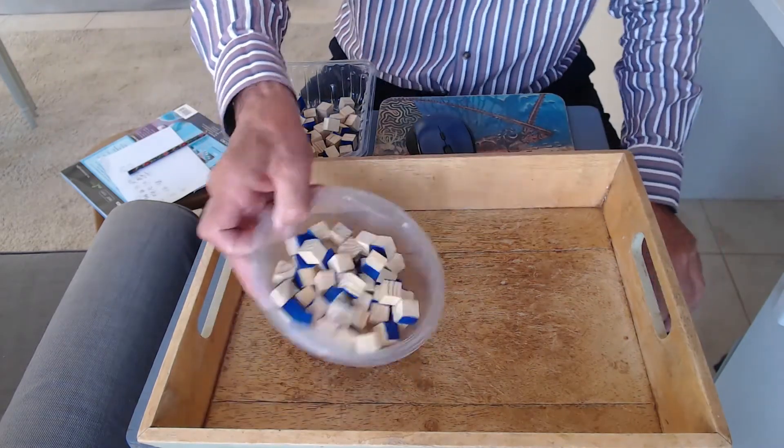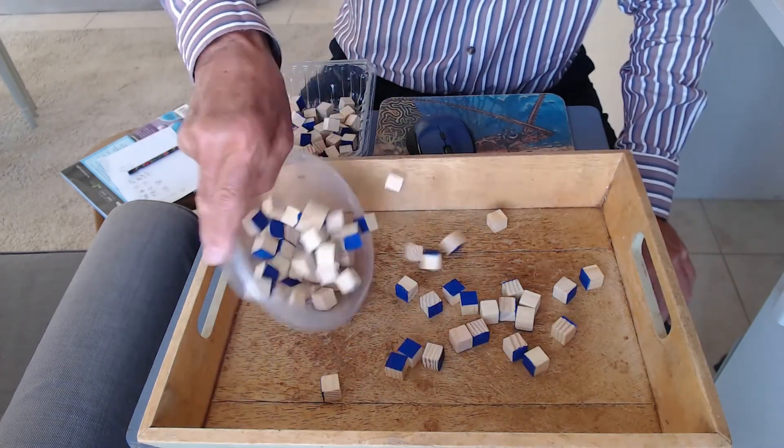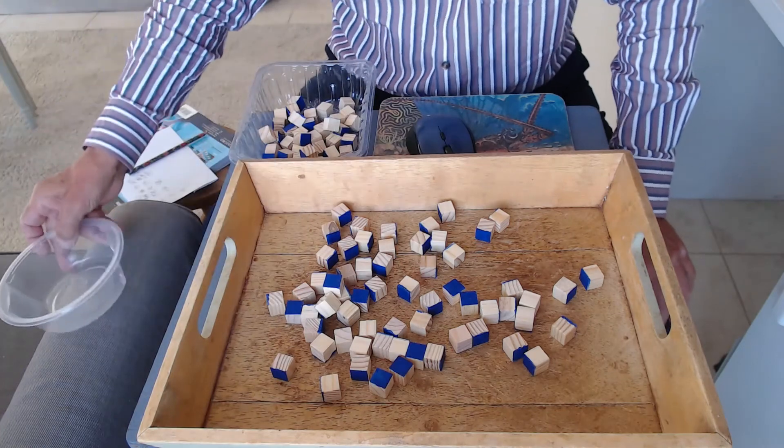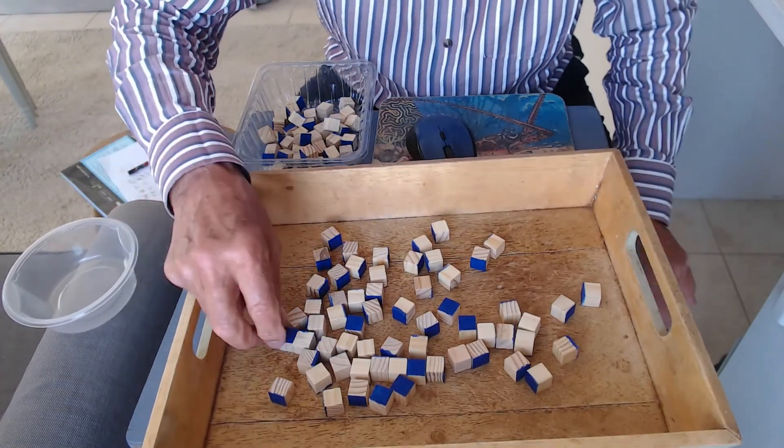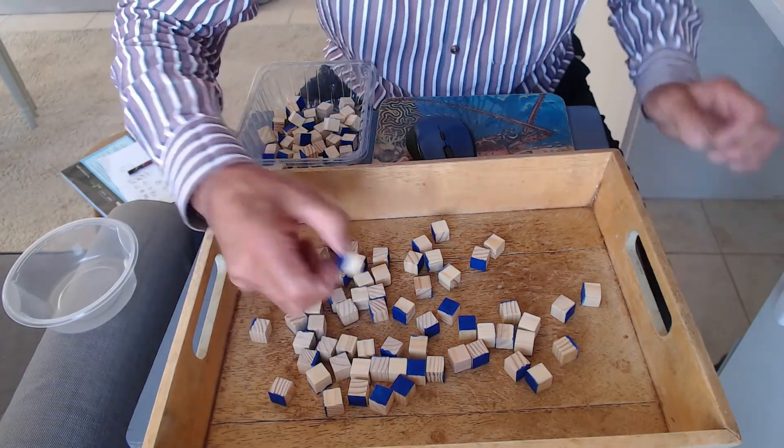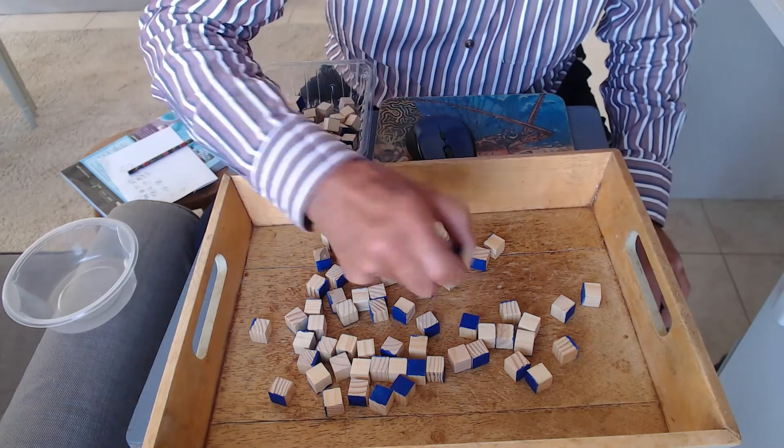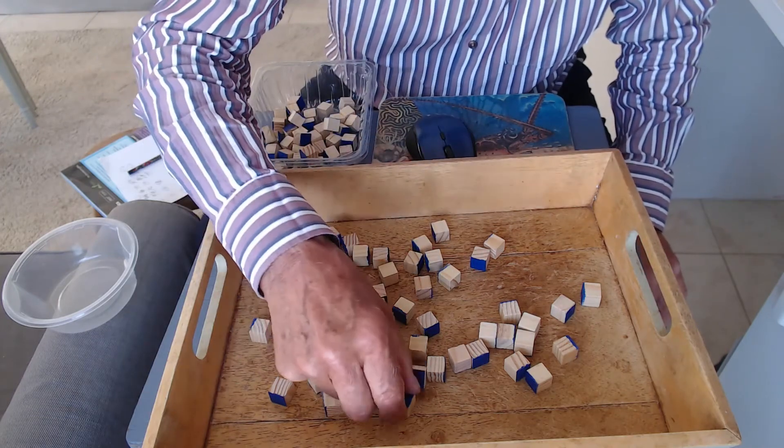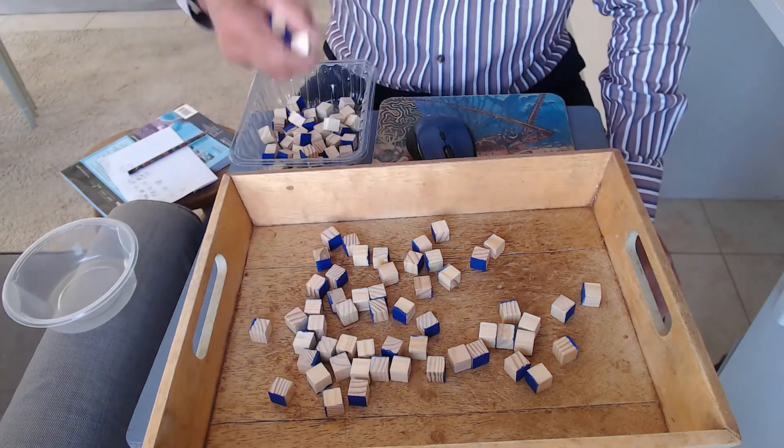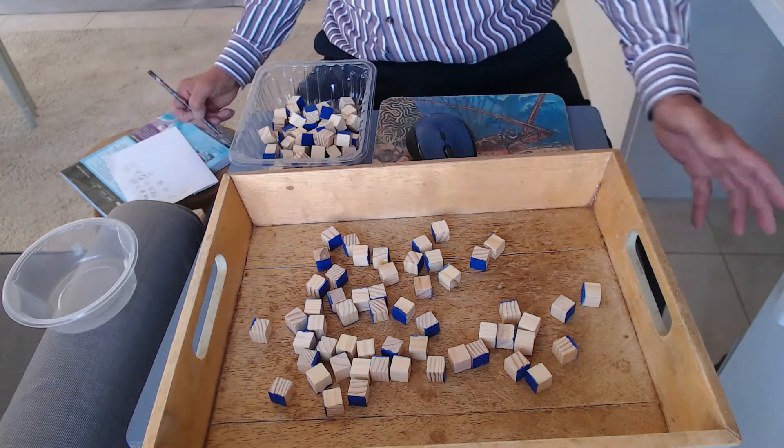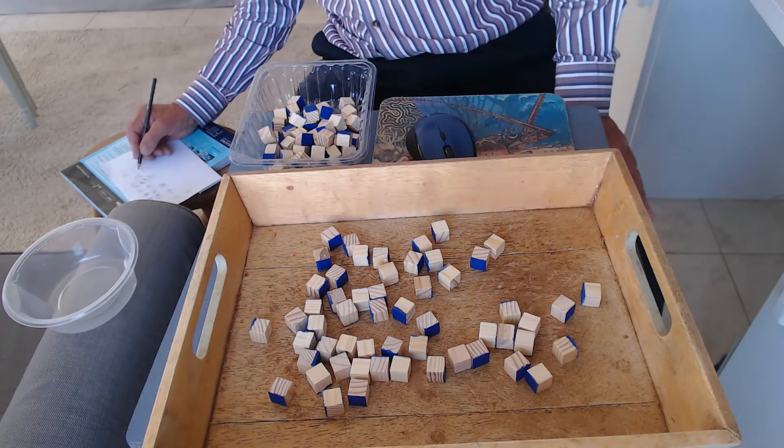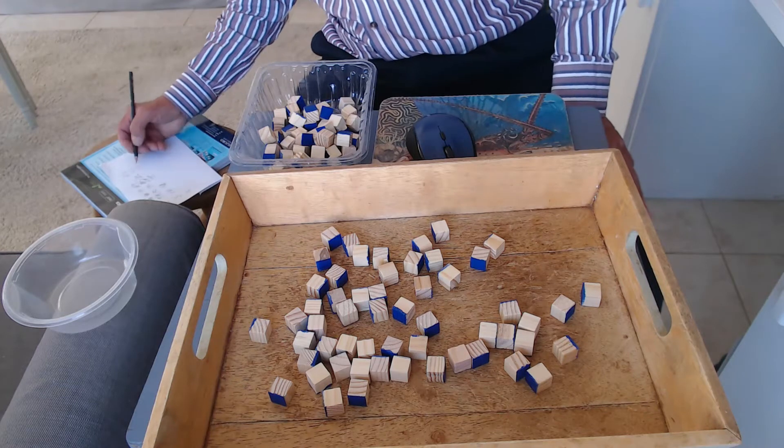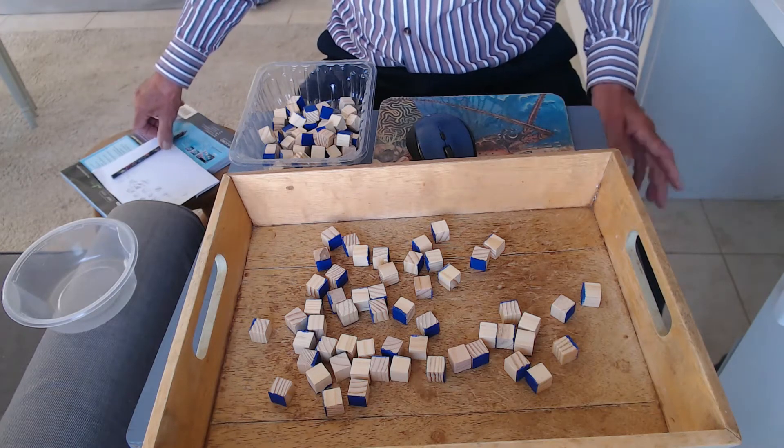We start with 62. We dropped 1, 2, 3, 4, 5, 6, 7. Seven decayed that time, so from 62 we go down to 55.